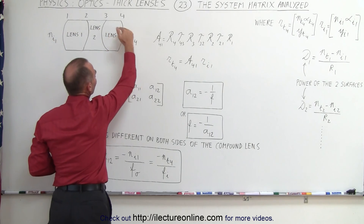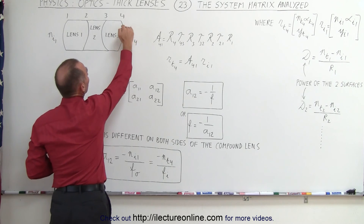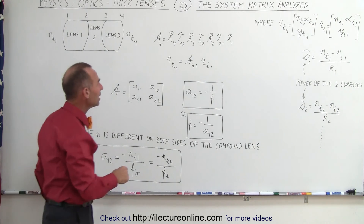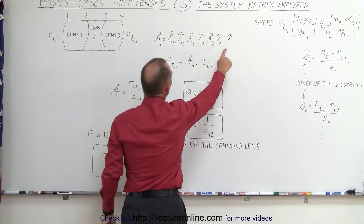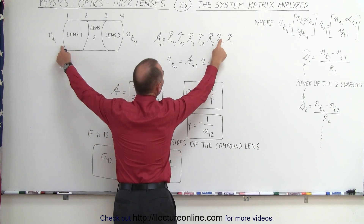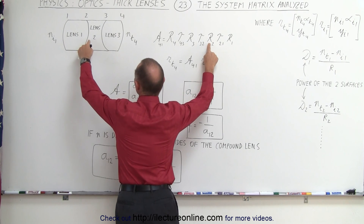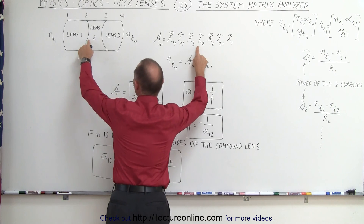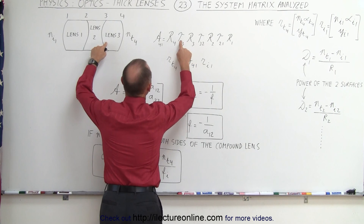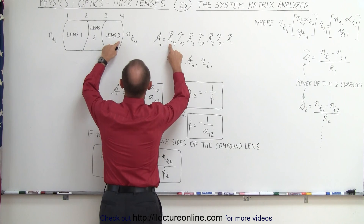We have the information as it exits the last boundary on the last lens. We need to know the angle relative to the horizontal and the height either above or below the optical axis. As you can see, to accomplish that we need the refracting matrix on the first boundary, the transition matrix between the first and second boundary, the refracting matrix across the second boundary, the transfer matrix from the second to the third boundary, the refracting matrix across the third boundary, the transfer matrix from the third to the fourth boundary, and finally the refracting matrix across the fourth boundary.